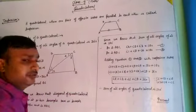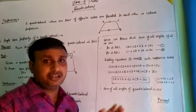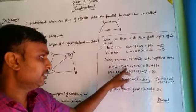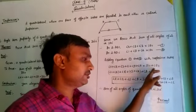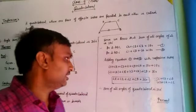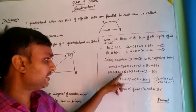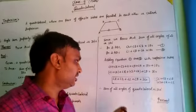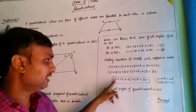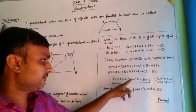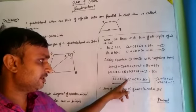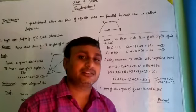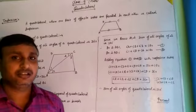Adding equation 1 and 2, with left side to left side and right side to right side, we get: angle 2 plus angle B plus angle 3 plus angle 1 plus angle D plus angle 4 is equal to 180 plus 180. Rearranging: angle 1 plus angle 2, together, plus angle B, plus angle 3 plus angle 4, together, plus angle D is equal to 360 degrees. Since angle 1 plus angle 2 equals angle A, and angle 3 plus angle 4 equals angle C, so angle A plus angle B plus angle C plus angle D is equal to 360 degrees. Hence, the sum of all angles of a quadrilateral is 360 degrees. Proved.